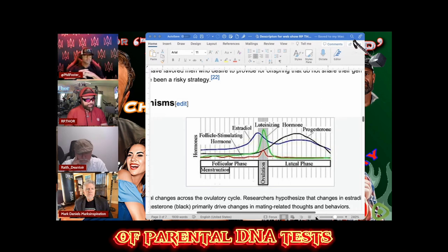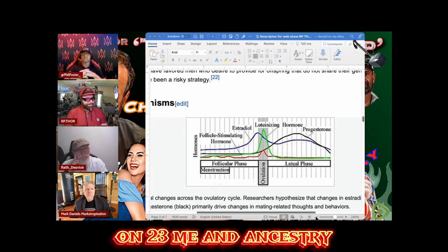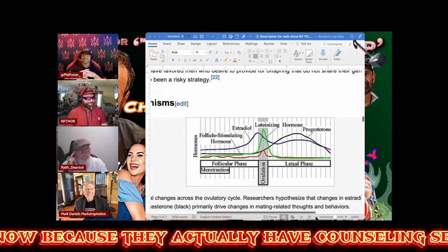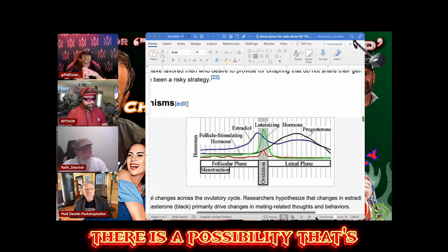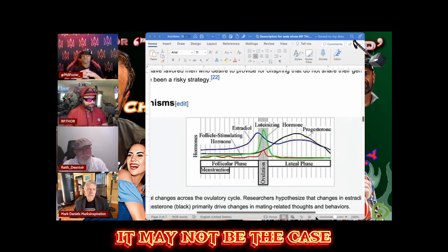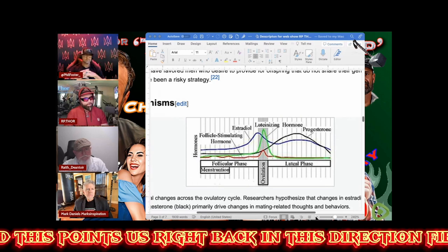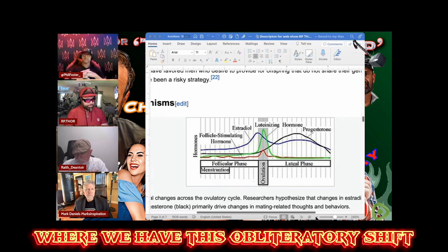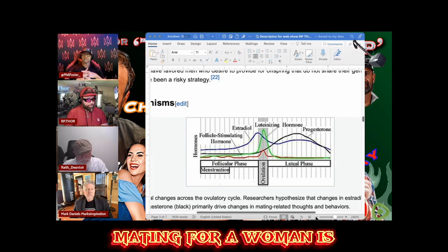There's even a warning on 23andMe and Ancestry where it says you may not want to find out, because they actually have counseling services. What you might have thought is a blood relative may not be the case, and it may be slightly more common than you think. This points us right back in this direction with this ovulatory shift that naturally occurs.